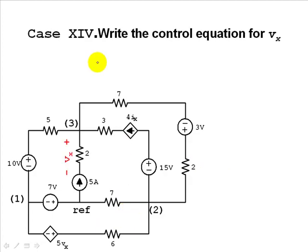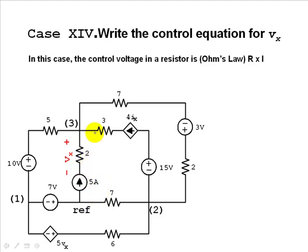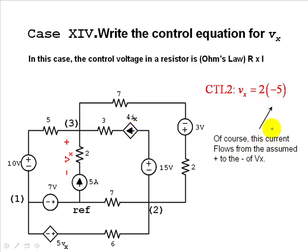Case 14: a voltage-controlled voltage source depends on the voltage across this 2-ohm resistor up here. We use Ohm's law: that voltage is the current flowing from high to low times 2 ohms. The current flowing from plus to minus is negative 5 amps, so Vx equals 2 ohms times negative 5. The current is negative 5 amps because it must be chosen to flow from the assumed positive to the assumed negative of the controlling variable Vx.